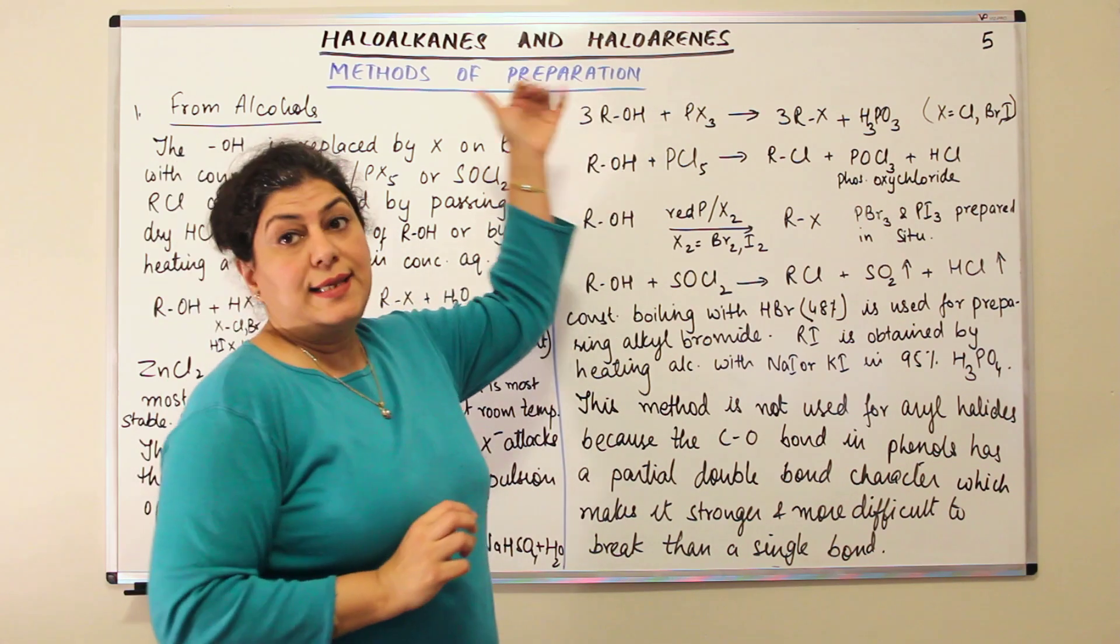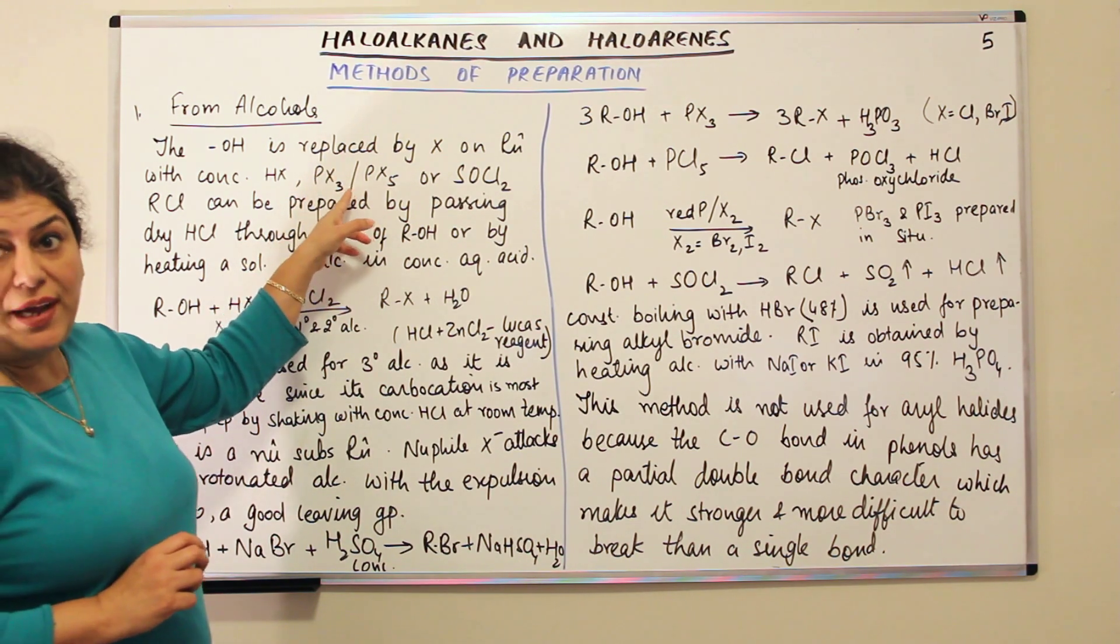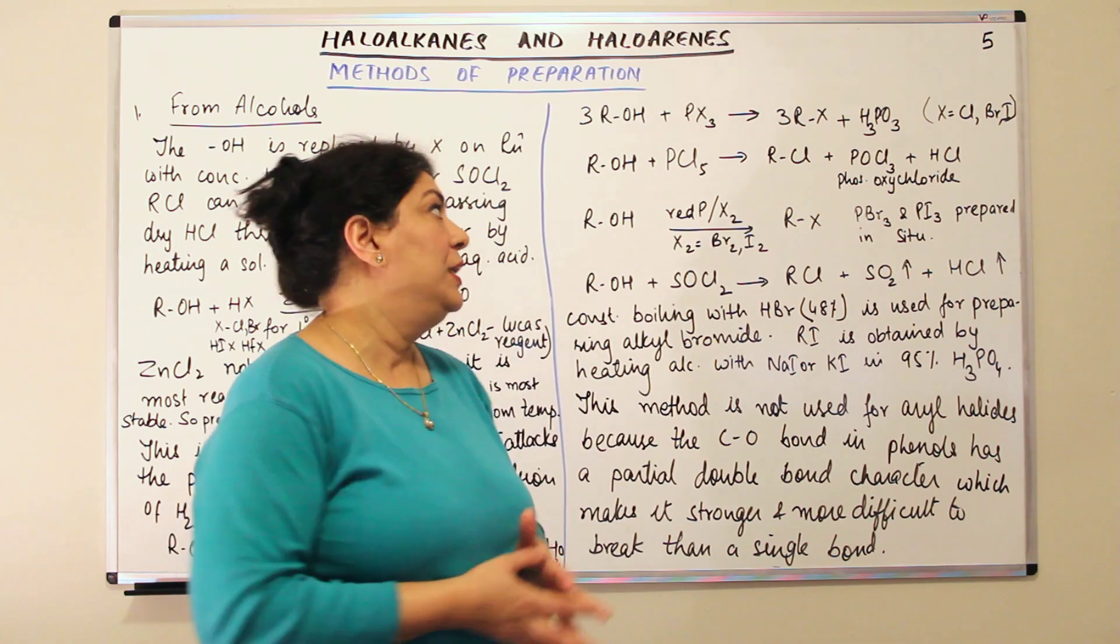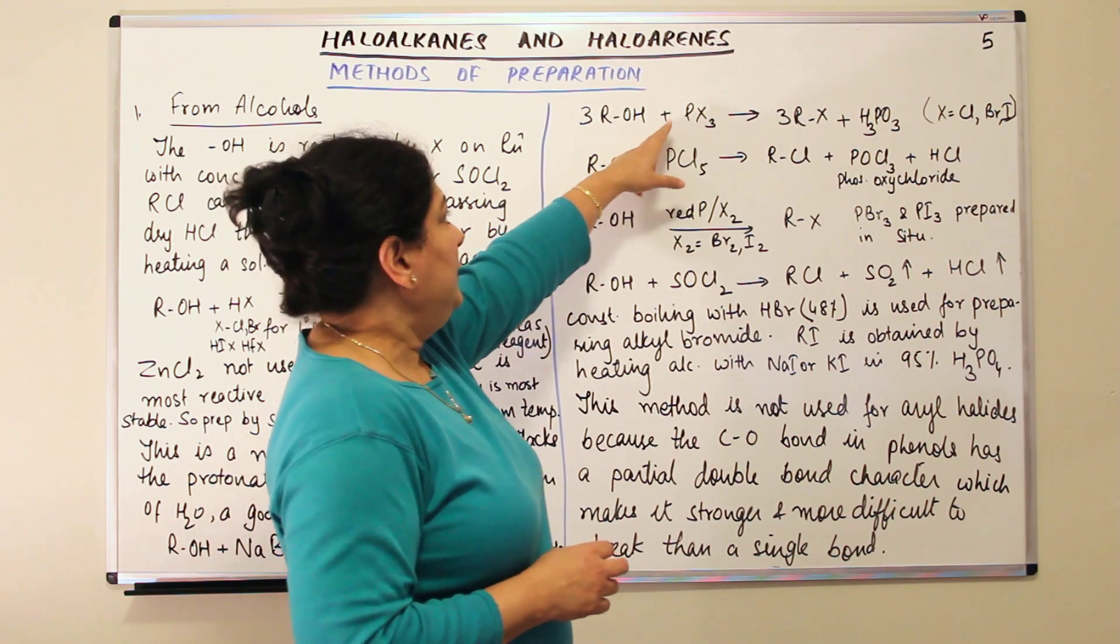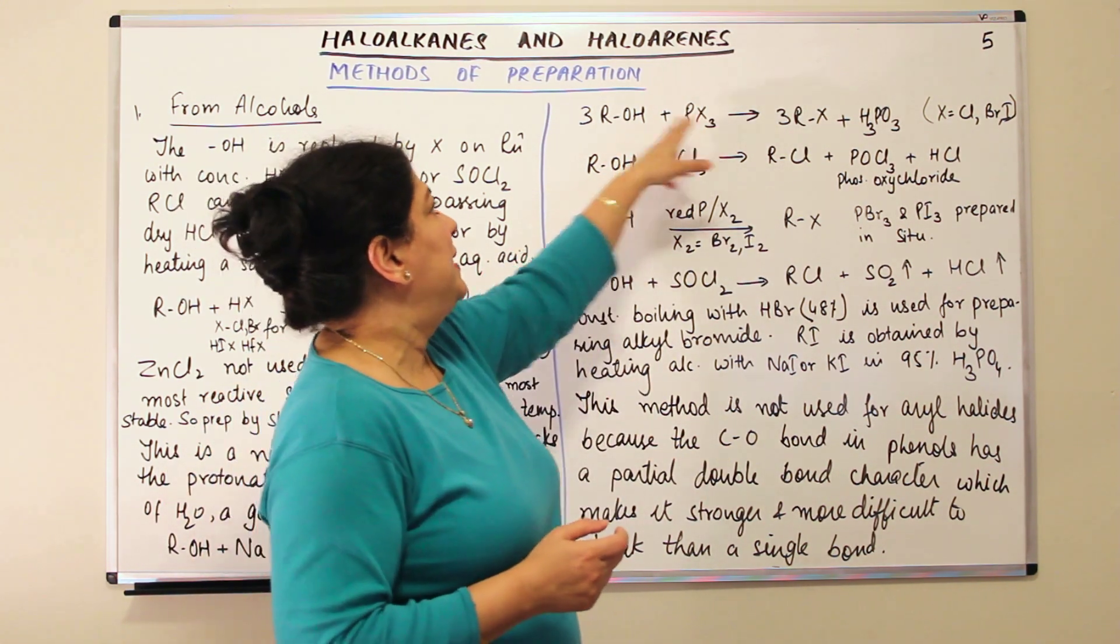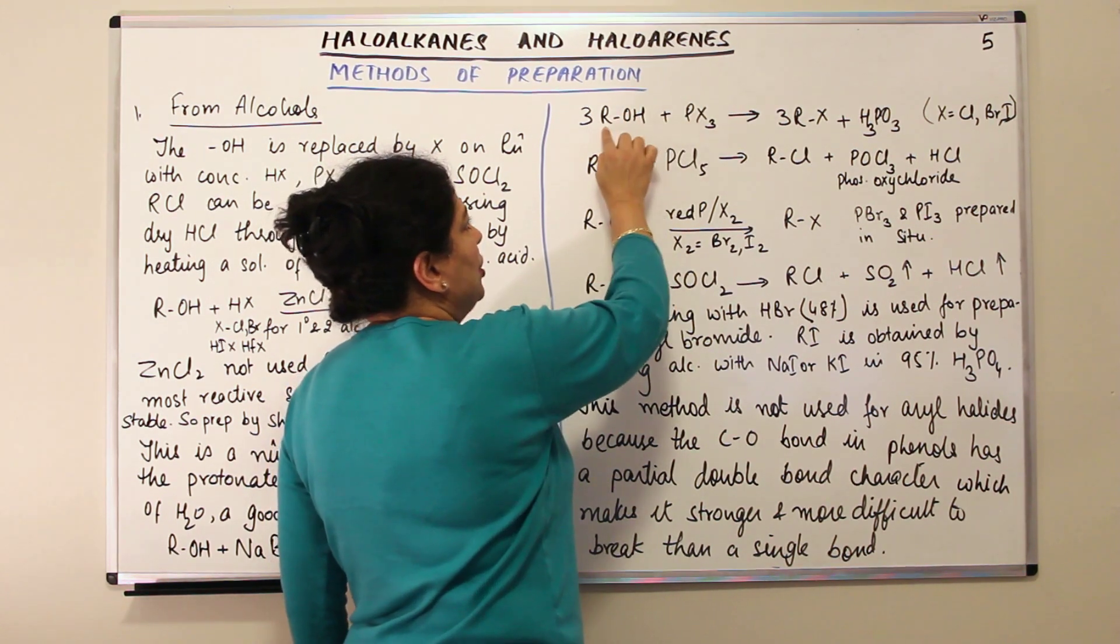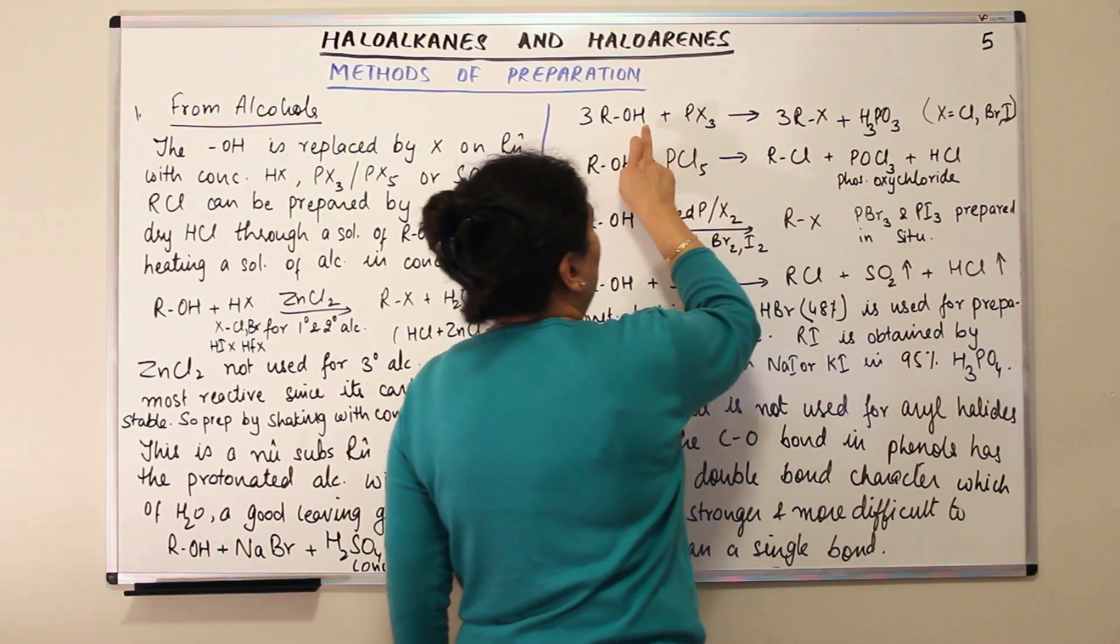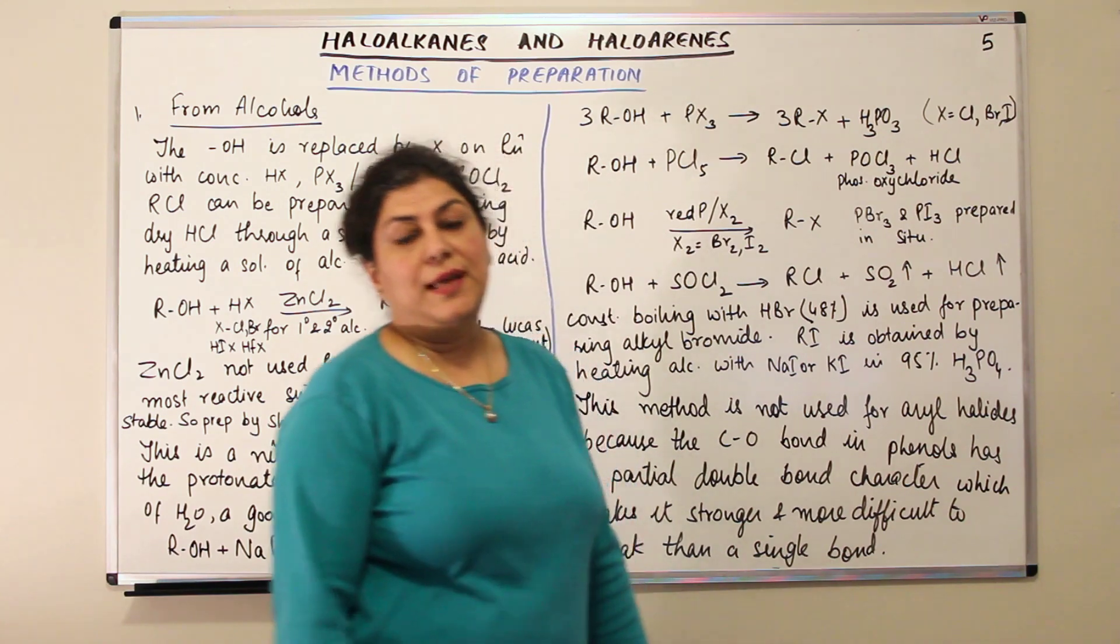The next way how you can do it is, as I told you, that you can use the halogen acid or you can use phosphorus trihalide or phosphorus pentahalide. So phosphorus trihalide and phosphorus pentahalide can also be used to give you the haloalkane. For example, you have 3ROH, this is an alcohol and PX3, phosphorus trihalide. X could be chlorine, it could be bromine, it could be iodine. So with PX3, it gives you 3RX, the three halogens would attach with the three alcohols and they would substitute the OH and it will give you 3RX. And the 3OH would combine with the phosphorus here to give you, now you have three hydrogens, three oxygens and one phosphorus. So that gives you H3PO3, that is phosphorous acid.